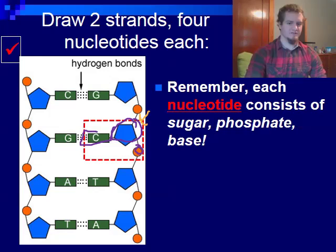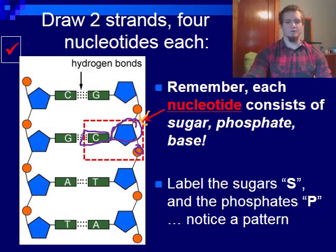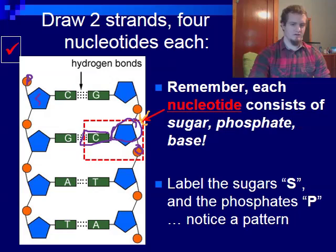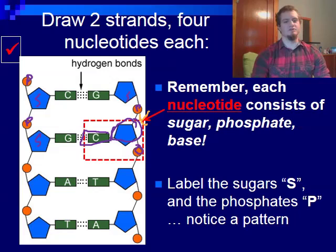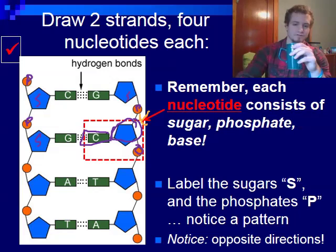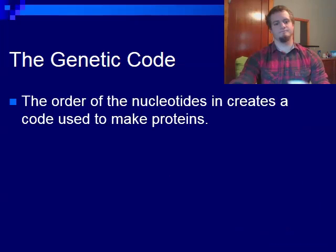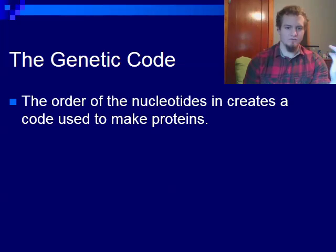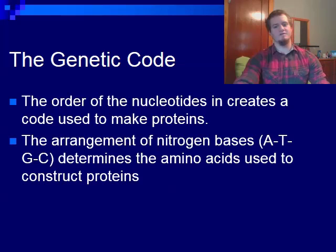If you label the sugars S and the phosphates P, you should notice a pattern: P, S, P, S on one side, and S, P, S, P on the other. The sugars and phosphates are always running in the opposite direction of one another. The order of the nucleotides creates the code used to make proteins — the arrangement of nitrogen bases, A to T and C to G, determines the amino acids that will be used to construct the proteins. It's kind of like how the alphabet makes words.